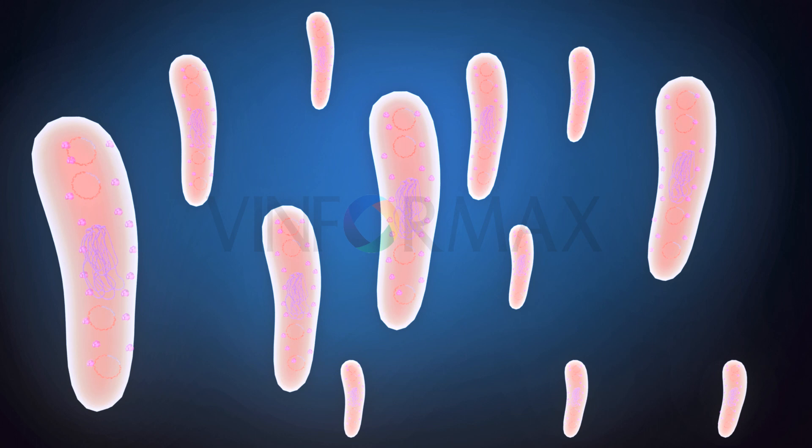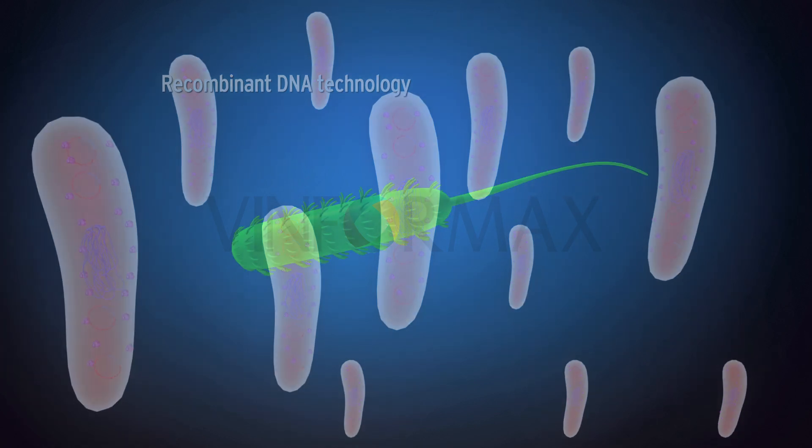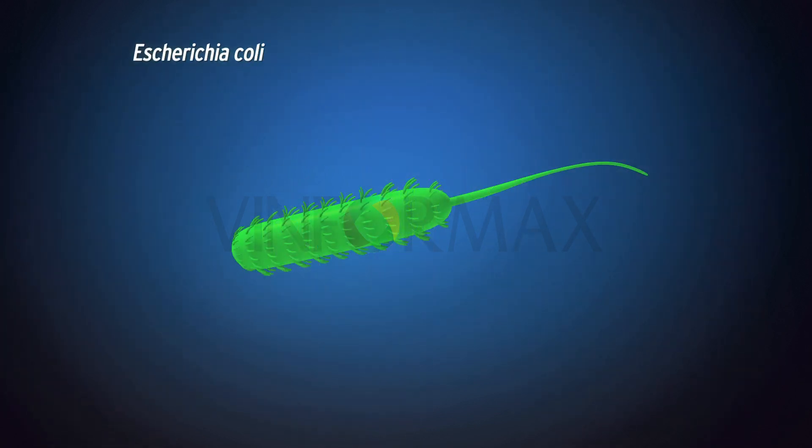This technology is called recombinant DNA technology. The bacterium Escherichia coli or E. coli is an extremely convenient tool for molecular biologists to study the effect of genetic manipulations. We can observe rapid results which can be quantified easily.